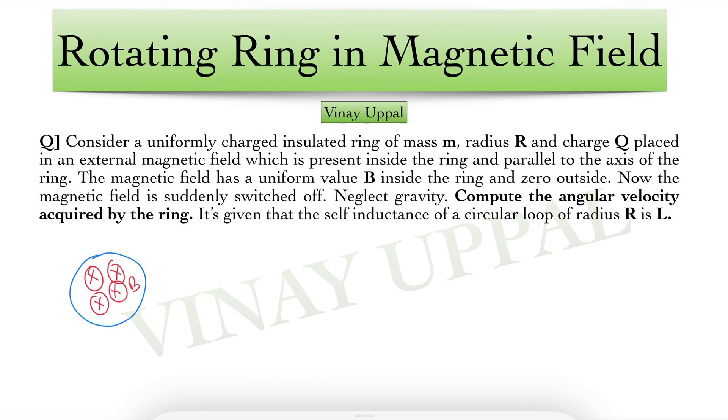All right. So this question basically has a time varying magnetic field. The magnetic field goes from B to 0. That means that will induce a non-conservative electric field which will produce a torque and that torque will produce an angular velocity. So let's take a look at the solution on the next page.